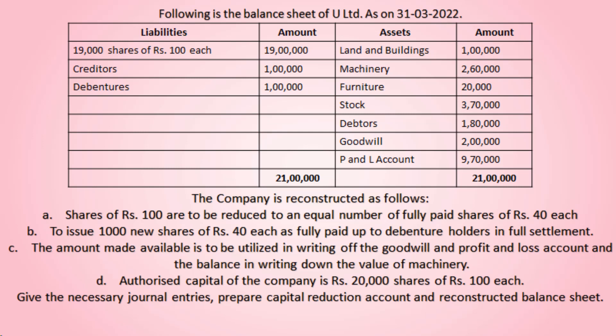They have decided to reconstruct the company. Shares of ₹100 are to be reduced to an equal number of fully paid shares of ₹40 each. So we have 19,000 shares of ₹100 each — that ₹100 each will be converted into ₹40. That will be our first journal entry. Now the second entry will be to issue 1,000 new shares of ₹40 each as fully paid up to debenture holders in full settlement.